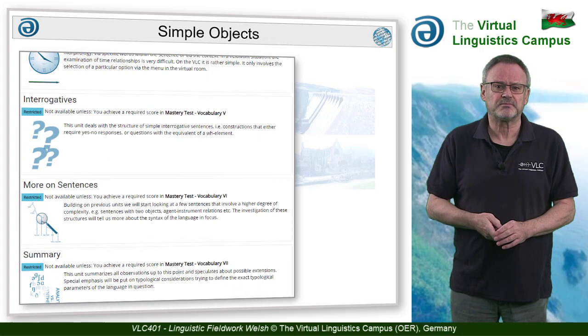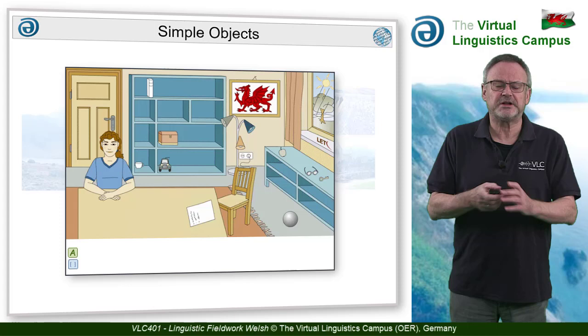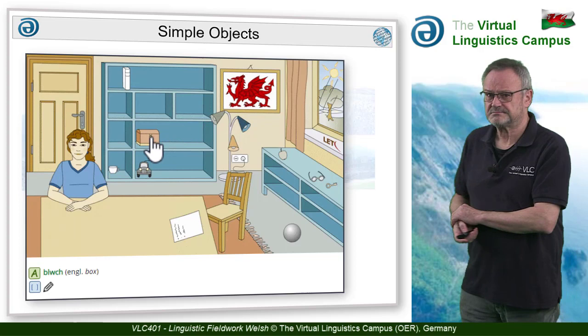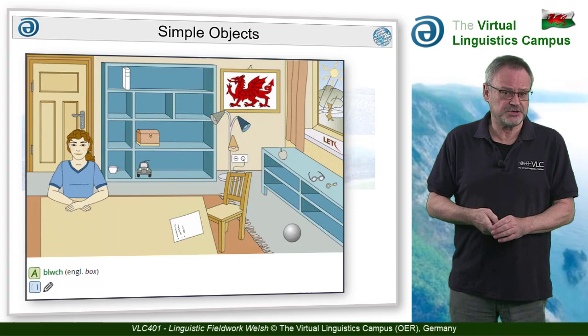The first scene deals with simple objects. In our virtual interview room, you find the native speaker and a number of clickable objects with their audio and orthographic representation. Your task is to transcribe what you hear as carefully as possible in order to set up a first sound system of the language in focus.